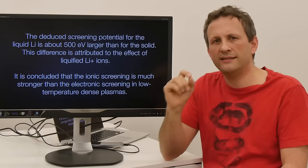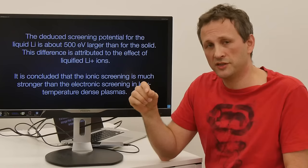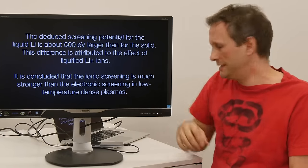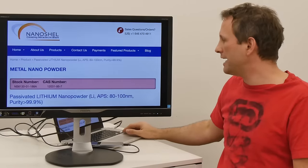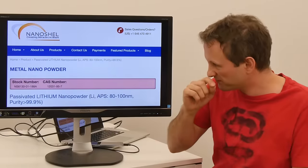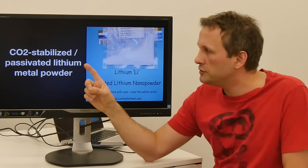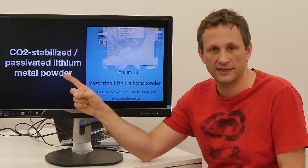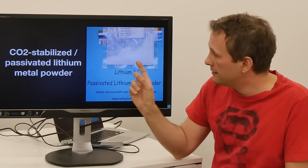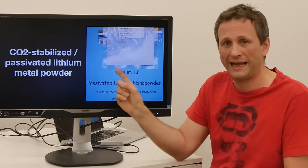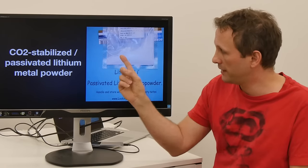But actually, the lithium we used in Glowstick 5.2, that was passivated lithium. And that comes from a company called Nanoshel. And what they're doing to that is they are CO2 stabilizing to passivate the lithium. And it ends up looking like a white powder. Like this. You see this white powder here.